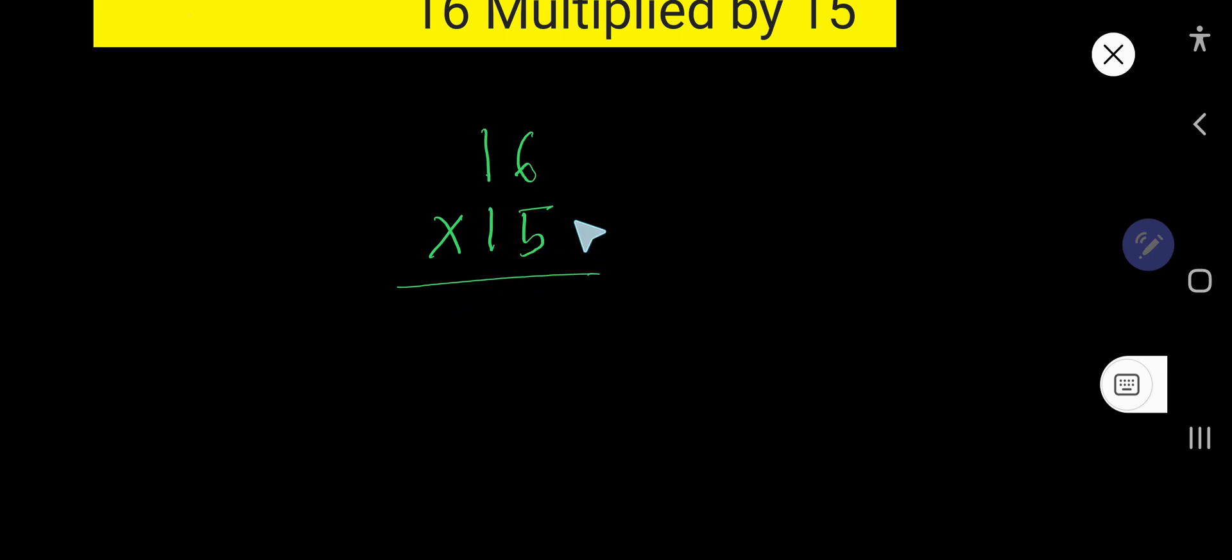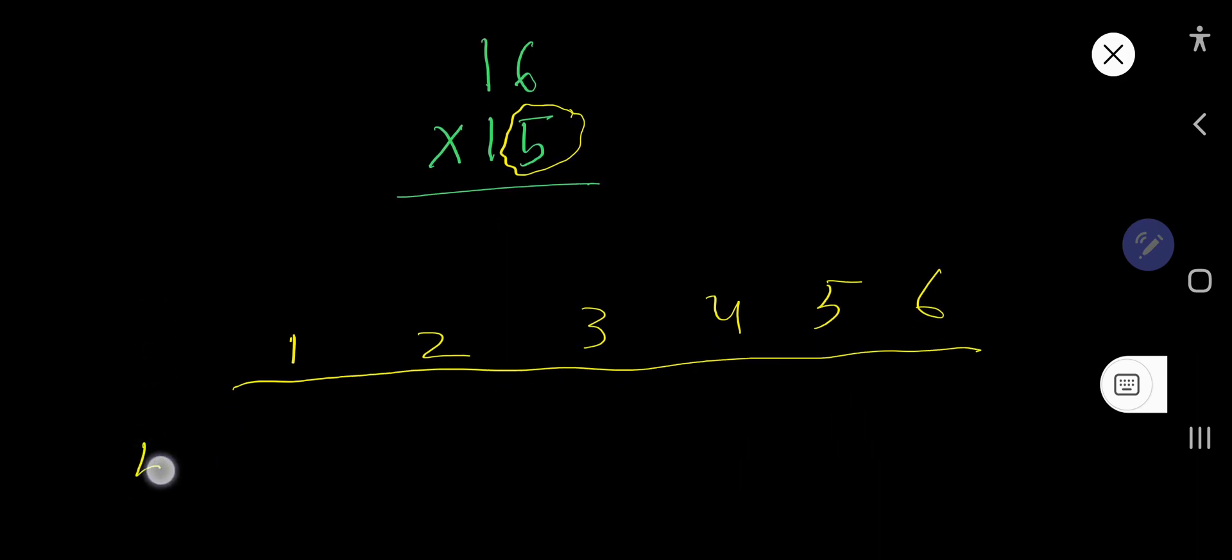5 times 6 equals what? Look, just write like this: 1, 2, 3, 4, 5, 6. Now you need the multiplication table of 5. 5 times 1 is 5. 5 times 2 equals what? Just add 5 with the previous step.